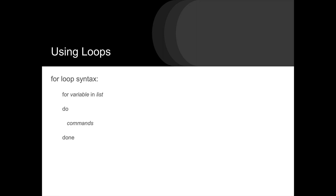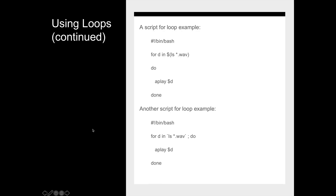Next we look at loops within a script. For a for loop you use 'for [variable] in [list]; do' with commands embedded within the do-done pair. In this example it matches all *.wav files, puts them in variable d, and applies the 'play' command using $d. There is also an alternate syntax with a semicolon before do — the same functionality with slightly different style.